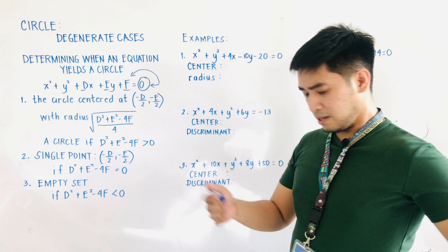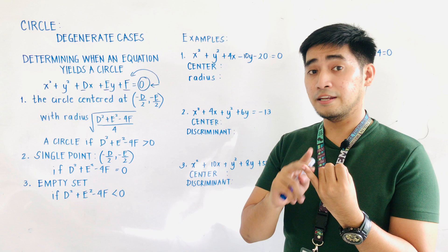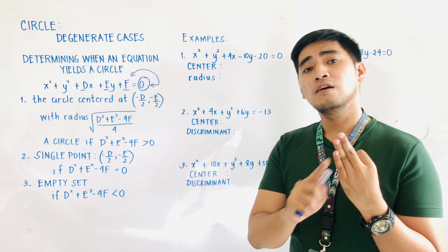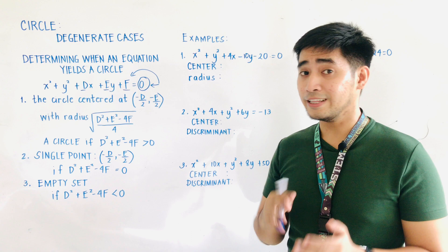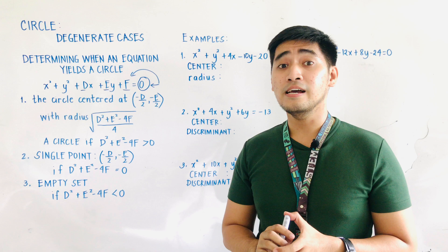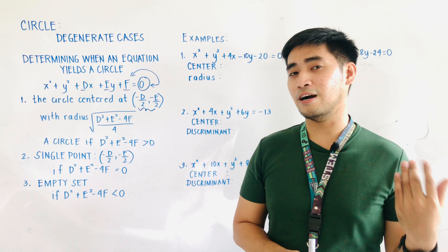There are three cases we need to remember: the equation really yields a circle, it is a single point, or it is an empty set. To determine the center using the general form, the formula is simply negative D over 2 and negative E over 2. This is the shortcut to locate the center by substituting the coefficients of x and y.